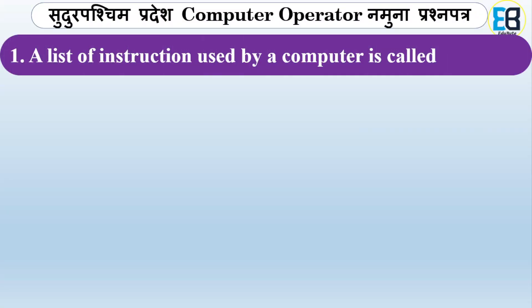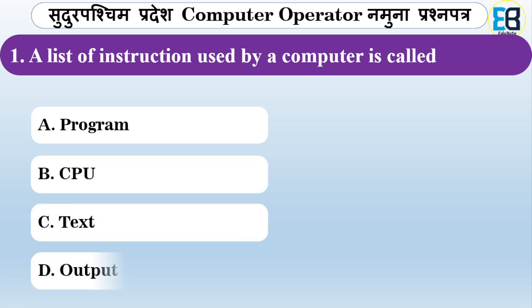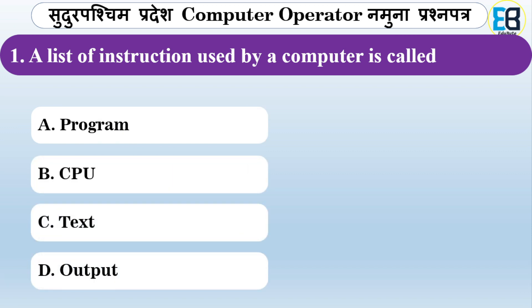First question: a list of instructions used by a computer is called what? Options are: program, CPU, text, or output. The answer is program — a list of instructions used by a computer is called a program.